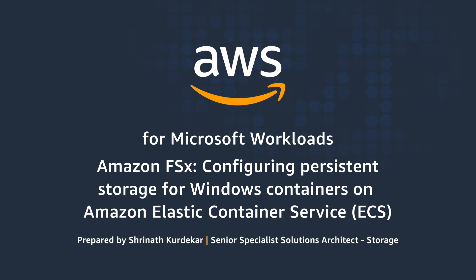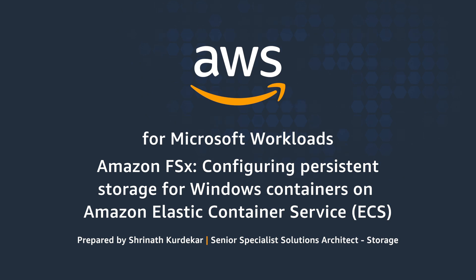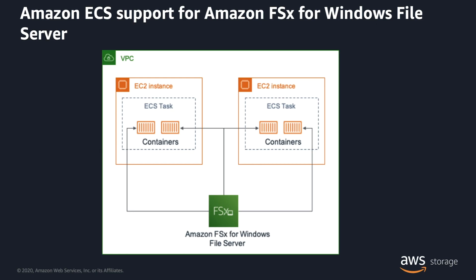With our recently launched support for Amazon FSx for Windows File Server, Amazon ECS now enables you to provision your Windows tasks with persistent, highly available, and shared file storage using Amazon FSx for Windows File Server. Amazon FSx for Windows File Server provides fully managed, highly reliable, and scalable file storage that is accessible over the industry-standard SMB protocol. Amazon ECS now natively integrates with Amazon FSx for Windows File Server to mount shared file systems into containers.